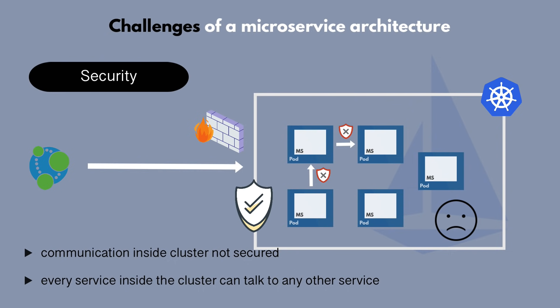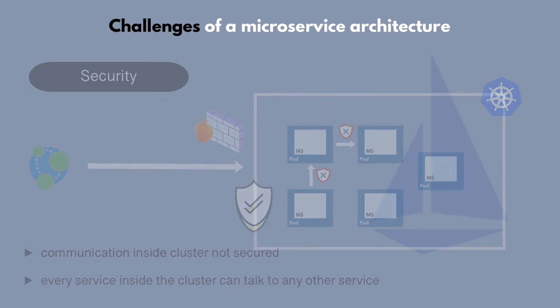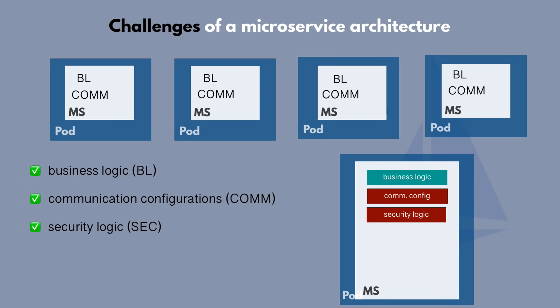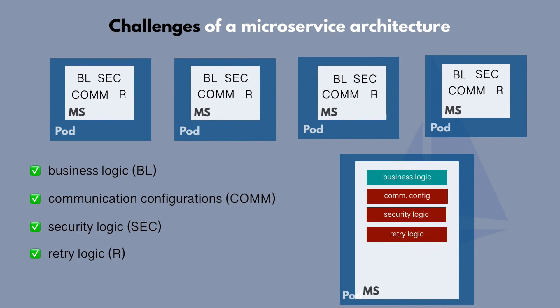For small applications without sensitive user data it may be acceptable, but for more important applications like online banks or apps with lots of personal user data, a higher level of security is very important. So additional configuration inside each application is needed to secure communication between services within the cluster. You also need retry logic in each microservice to make the whole application more robust — if one microservice is unreachable or you lose connection briefly, you want to retry the connection, so developers add this retry logic to the services.